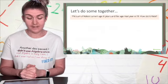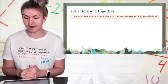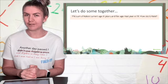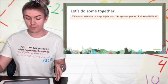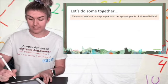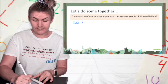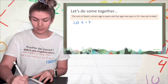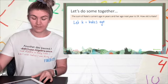Let's try some now. The sum of Kate's current age in years and her age next year is 19. How old is Kate? So sometimes we have to really think through the problem, but first step is always to define the pronumeral. So I'm going to say let k equal Kate's age. I chose k for Kate.